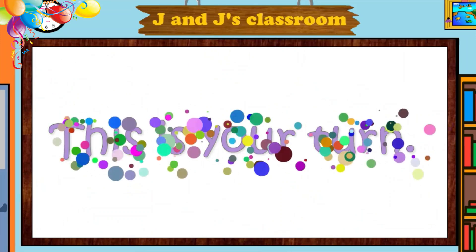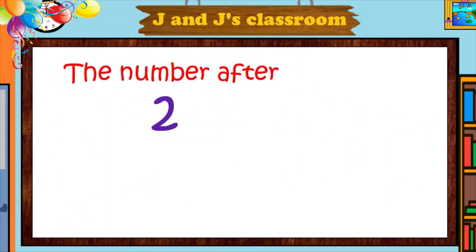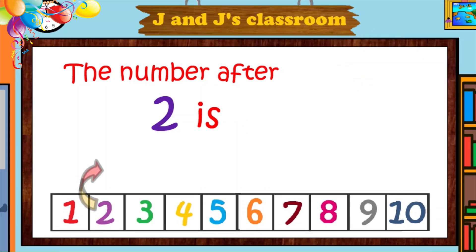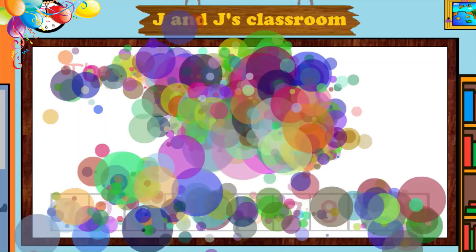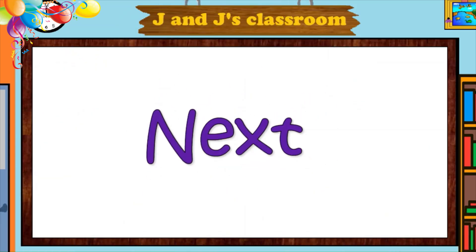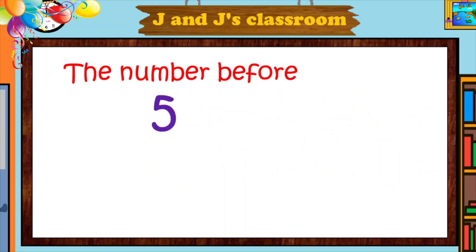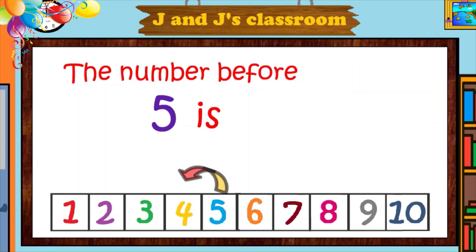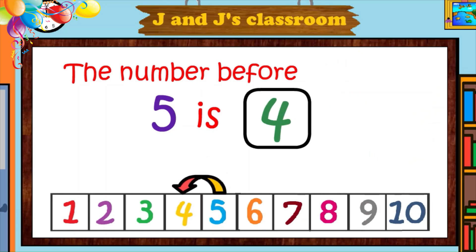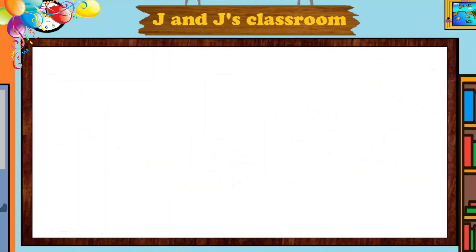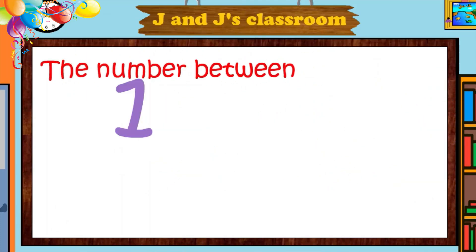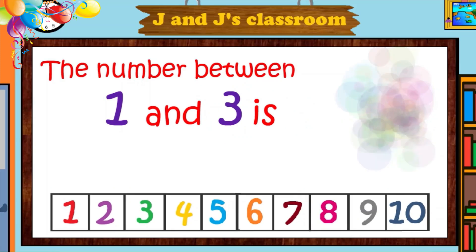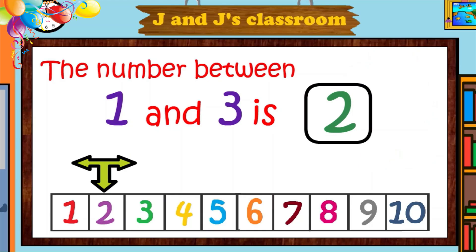Now it's your turn. The number after two is what? It's three. Next. The number before five is what? It's four. Next. The number between one and three is what? Between one and three is two.